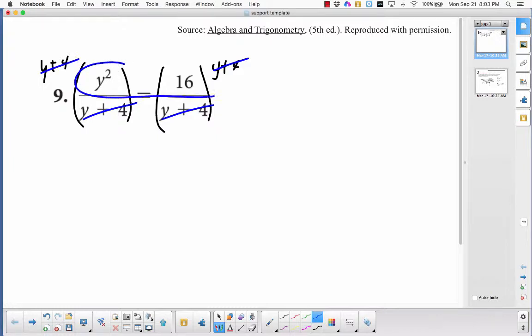So really all I have left is y squared is equal to 16. I use the square root principle, so I'll square root this side and square root this side. Remember I need to put a plus minus on this one.